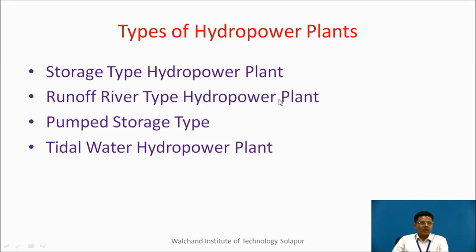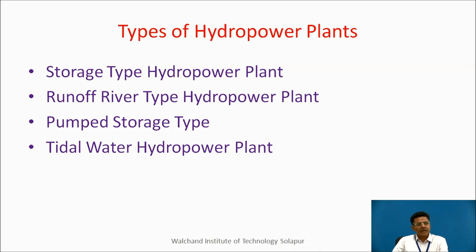Now let us very briefly discuss different types of hydro power plants. Hydro power plants can be of storage type, runoff river type, pumped storage type, and also tidal water hydro power plant.